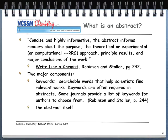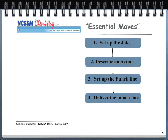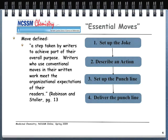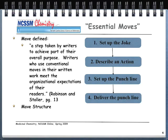The second component is the abstract itself, which is what this podcast will primarily look to talk about. In writing an abstract, the ACS publication Write Like a Chemist describes what they call moves — a move is defined as a step taken by writers to achieve part of their overall purpose. Writers who use conventional moves will meet the organizational expectations of their readers. The textbook describes a move structure using the analogy of telling a joke: step one sets up the joke, step two describes the main action, step three sets up the punchline, and step four delivers the punchline.